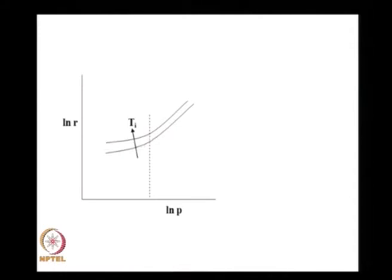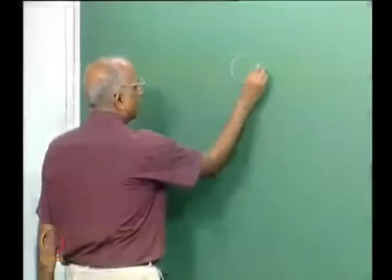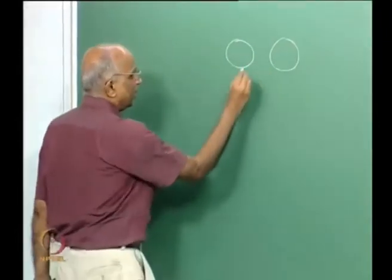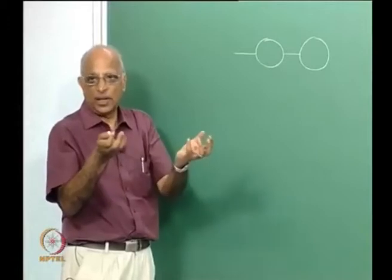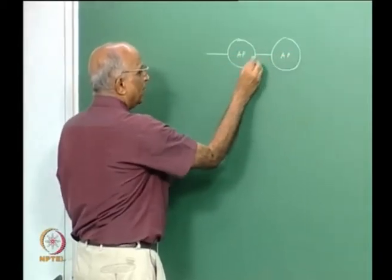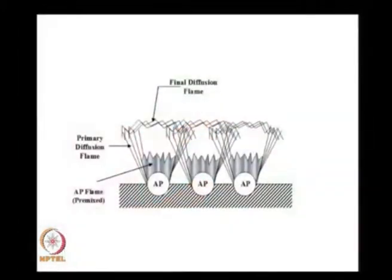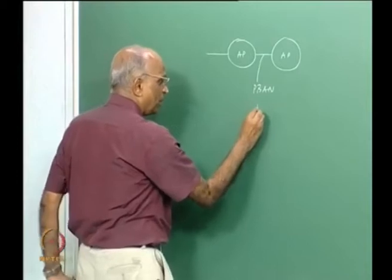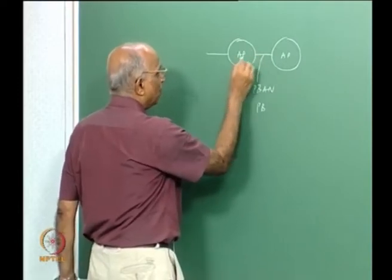We would like to do the same type of analysis for a composite propellant, which is distinctly different from a double base propellant. We have AP — ammonium perchlorate — in the form of crystals, contained in polybutadiene. We could also have aluminum. So we have AP solid crystals bonded by polybutadiene binder, which could be HTPB, CTPB, polybutadiene acrylic acid acrylonitrile — this is the fuel or the binder.